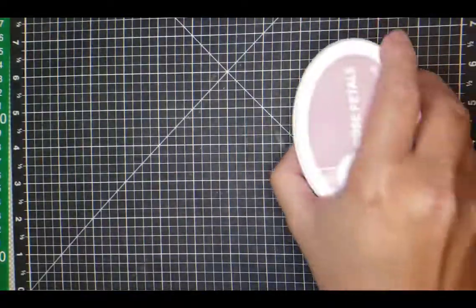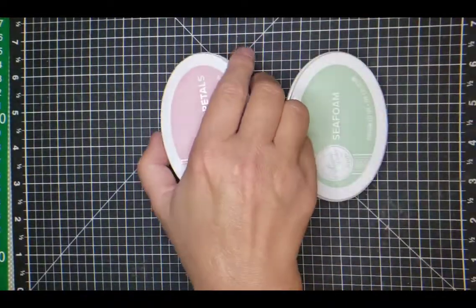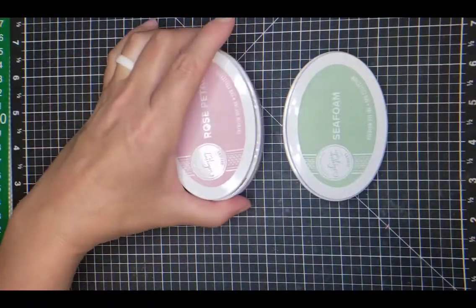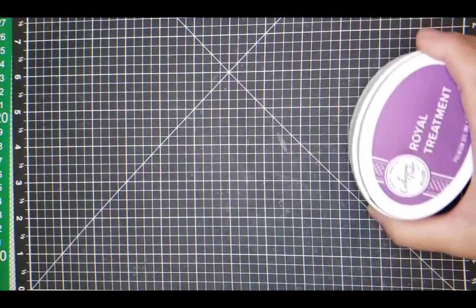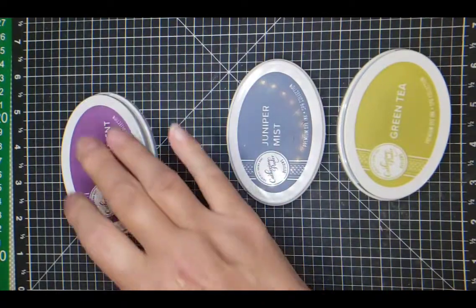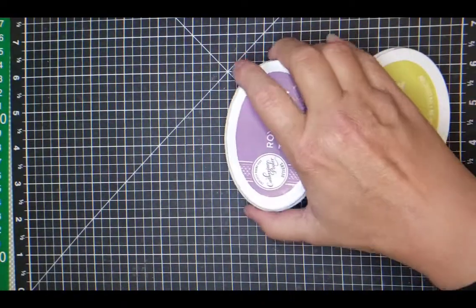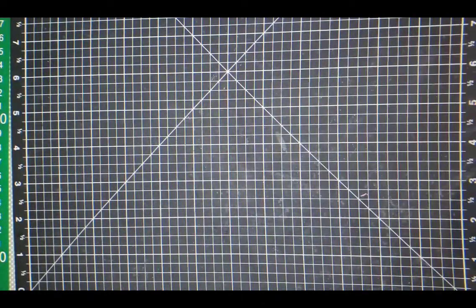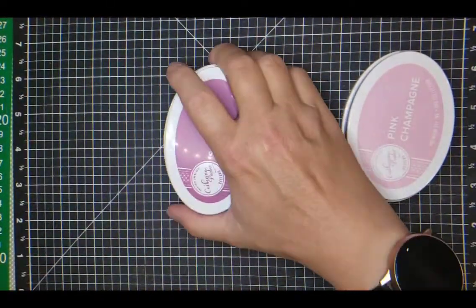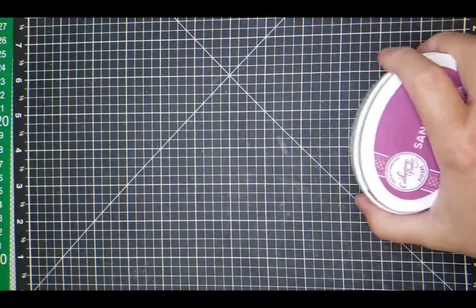The dies come with leaves and flower dies, but I'm not using those today. The inks I'm using are rose petals, stone blue, seafoam, royal treatment, juniper mist, and green tea. These inks are by Catherine Pooler.